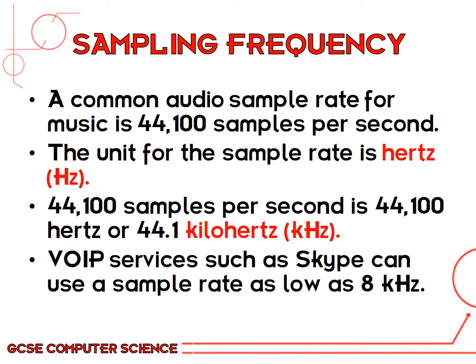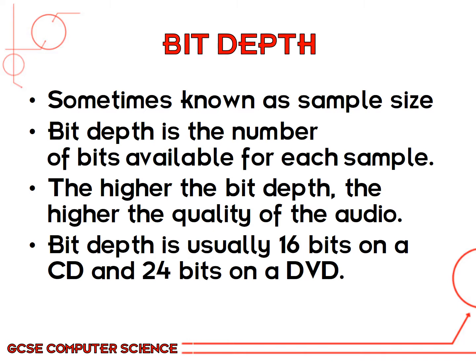The sample rate for VoIP services — any service you use to talk to people over the internet, like Skype — can use a sample rate as low as 8 kilohertz so that data transmits quickly without losing data, however the quality is not always the best. For every single sample taken — which could be 44,000 times in one second — the bit depth is the number of bits available for each sample. The higher the bit depth, the higher the quality. The usual bit depth is 16 bits for a CD and 24 bits on a DVD.